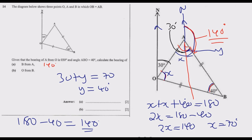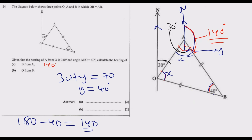Now let's move to part B — finding the bearing of O from B. We move to point B and draw a north line parallel to the original north line. We want to know how many degrees we turn at B, starting from north, going all the way to face the line going towards O.